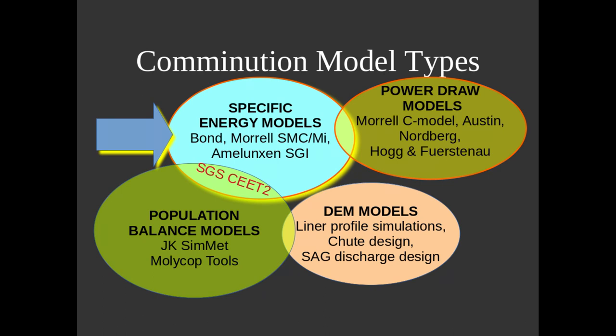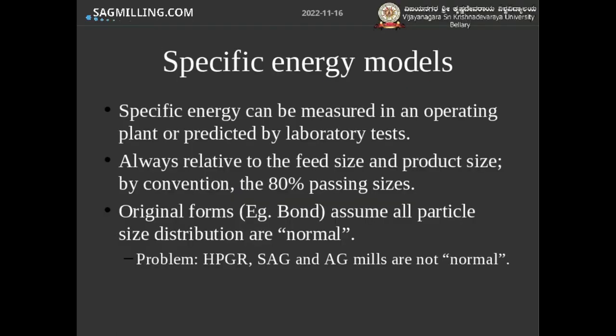We'll now move on to the specific energy models, which predict the E value from the equation shown on an earlier slide. These are used in conjunction with power draw models to do mill designs for a brand new circuit. The E term represents the specific energy required to break a rock to a desired size, and it includes things like ore hardness. The specific energy can be measured on an operating plant or predicted from laboratory tests, and it is also a factor of the feed size and the product size you want to generate.